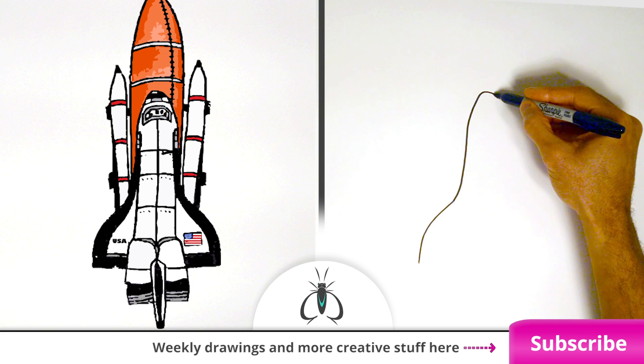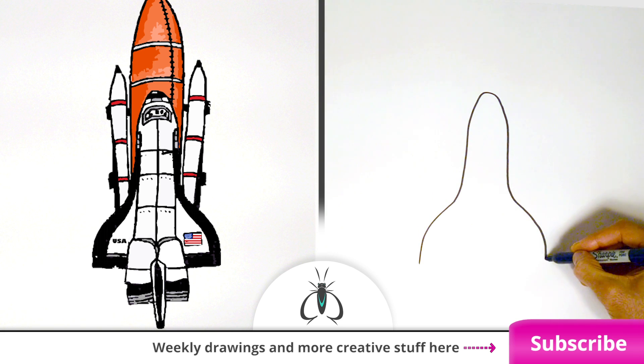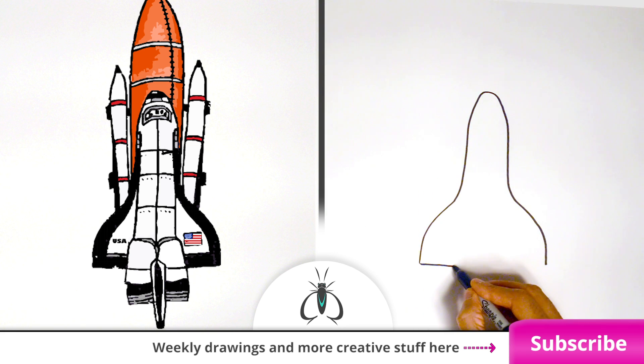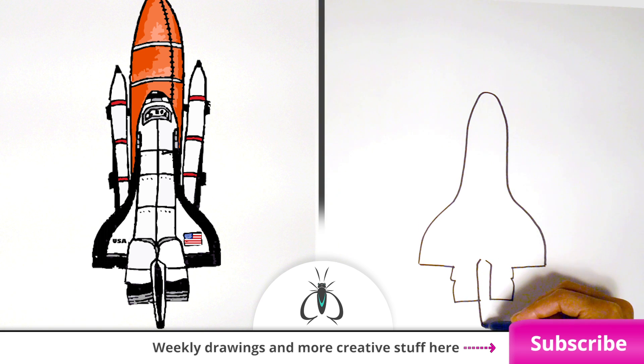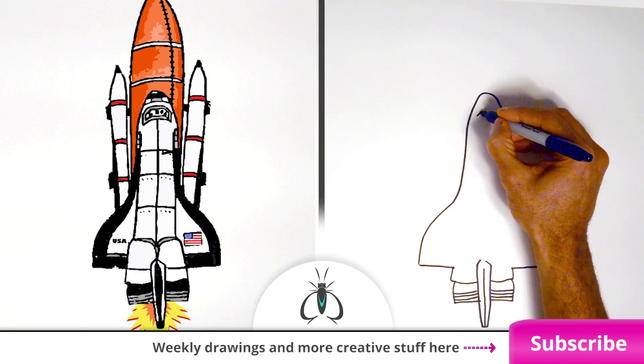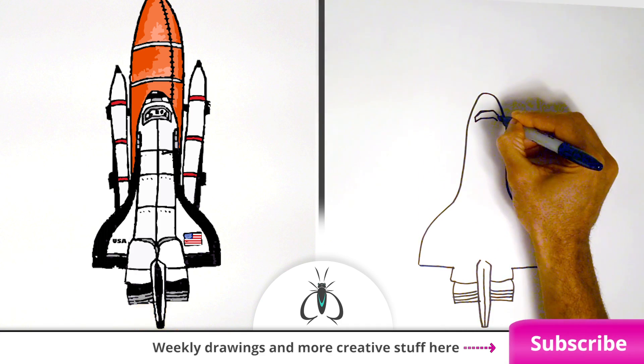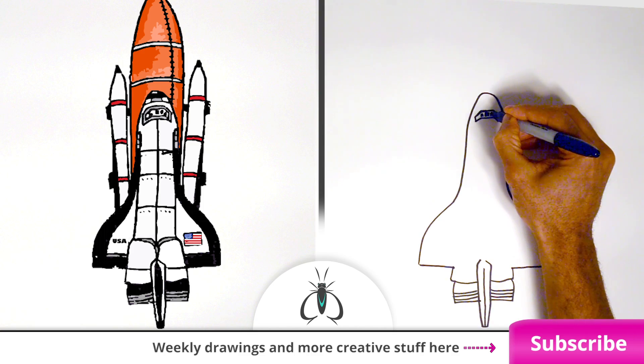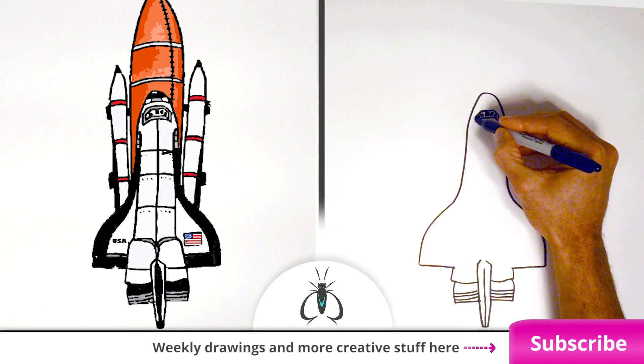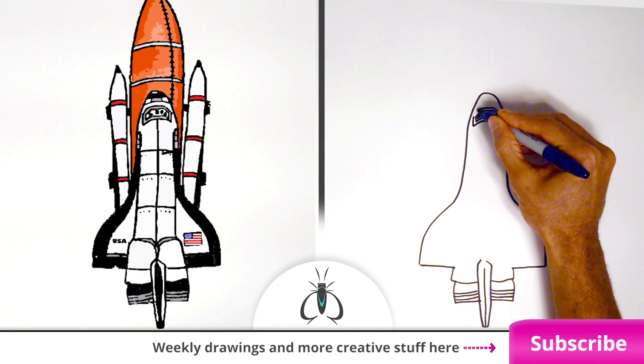Now let's start with the shuttle orbiter. The orbiter is the part that looks kind of like a plane. It's got a long smooth body, also called the fuselage, and two big main engines down here on the bottom. During launch, fire shoots out the bottom to propel the shuttle upwards. There's a crew cabin up here. It's like a little window. That's where the astronauts live.